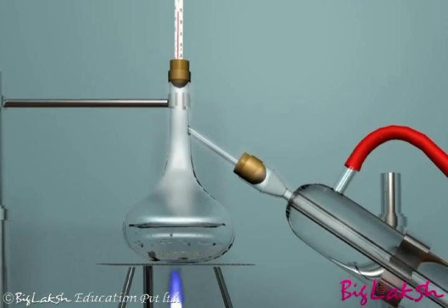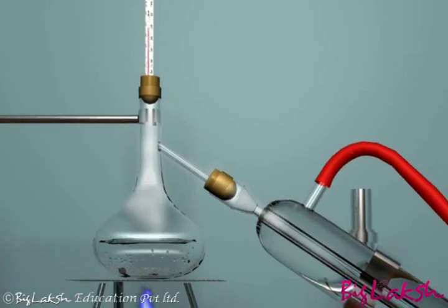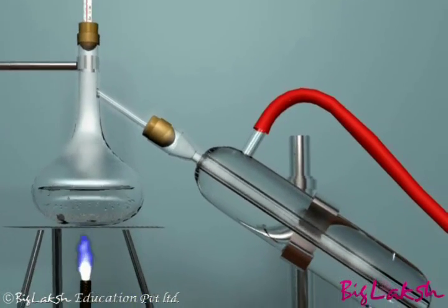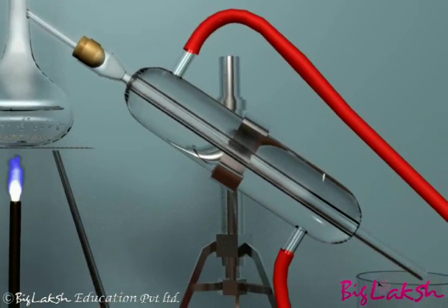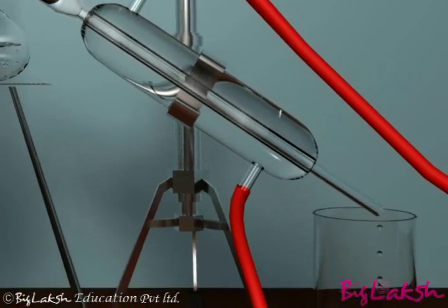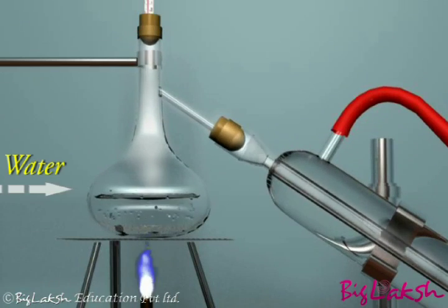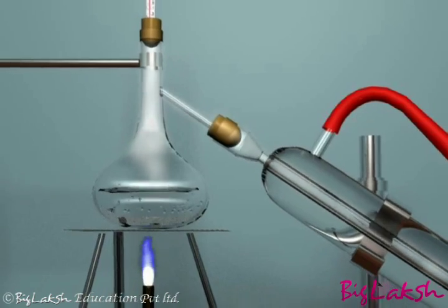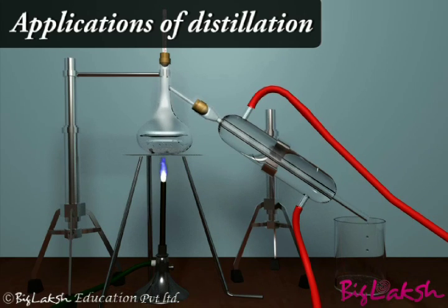See the acetone vaporizing and then condensing in the condenser. This acetone can now be collected from the condenser outlet. On the other hand, the water is left behind in the distillation flask. Do you know there are several important applications of distillation? Let us discuss a few important ones.